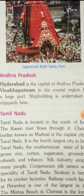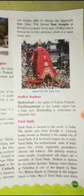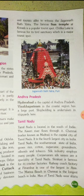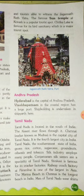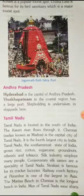Now we will know about Tamil Nadu. Tamil Nadu is located in the south of India. The Kaveri river flows through it. Chennai is the capital city of Tamil Nadu. Chennai was earlier known as Madras. It is the fourth largest city in India.